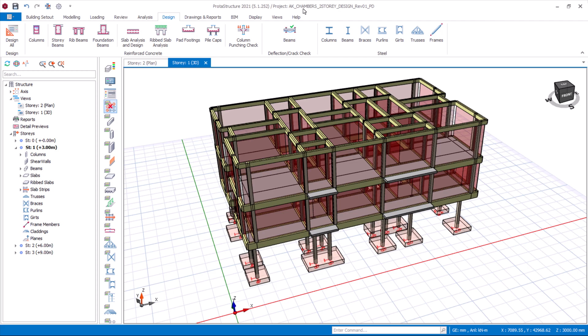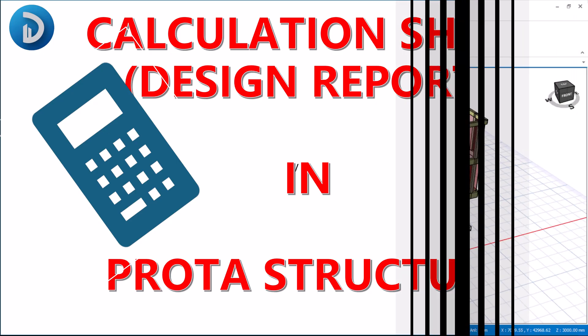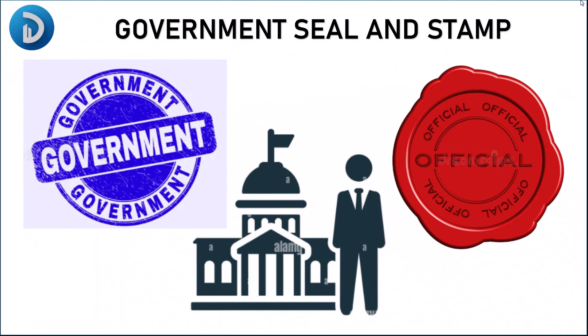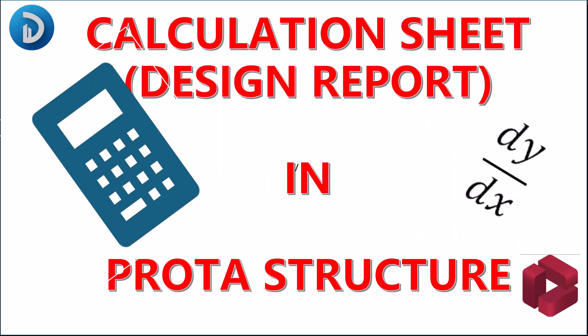Welcome to DBK Conducts. Today we shall be looking at your design report, popularly known as your calculation sheet. Your calculation sheet is a very important document in every structural design, because this is the only way you can guarantee that some mathematics were done behind the members provided for construction. In most countries, if you intend to seal your structural drawing, the government agency will always request the calculation sheets to back up the members provided during your design phase.